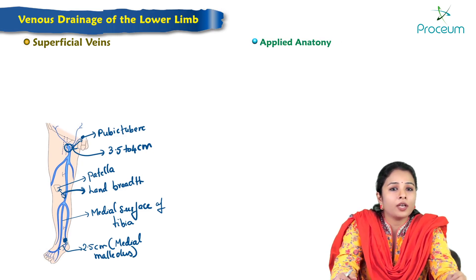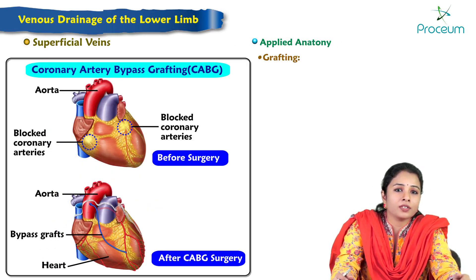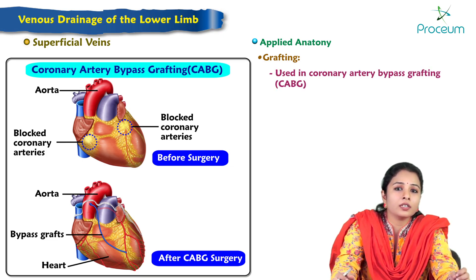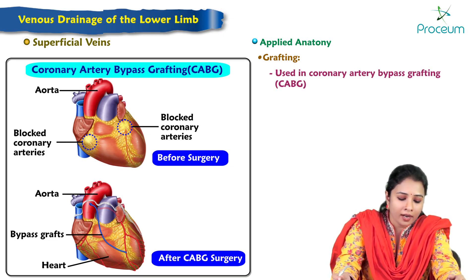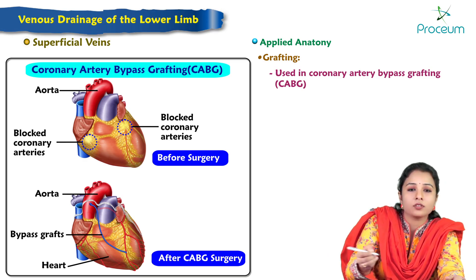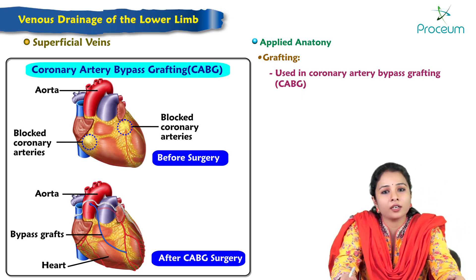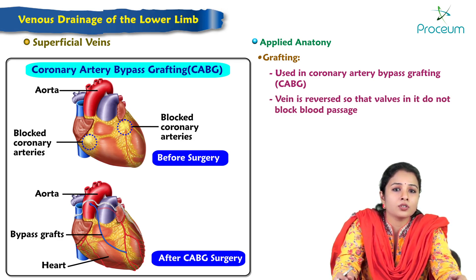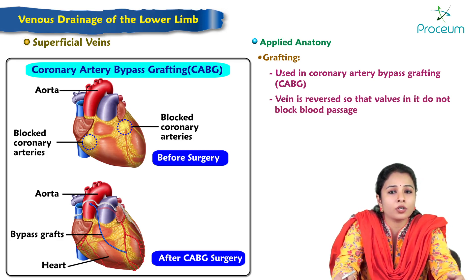Regarding applied anatomy: the great saphenous vein is used in coronary artery bypass graft surgery (CABG). The vein is reversed so that its valves do not block the passage of blood.